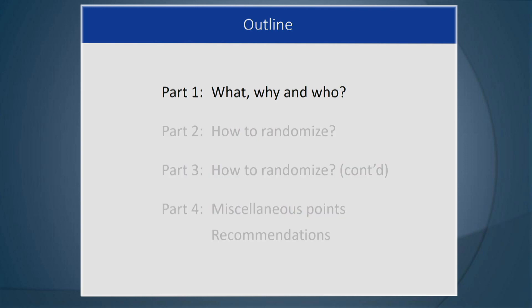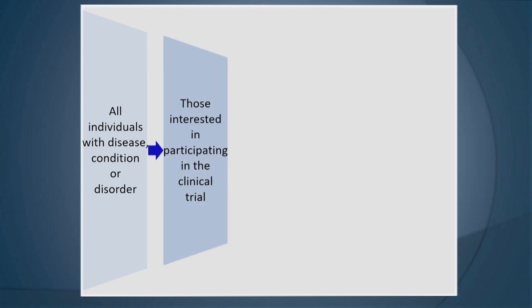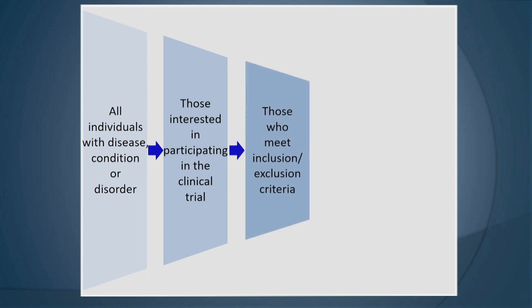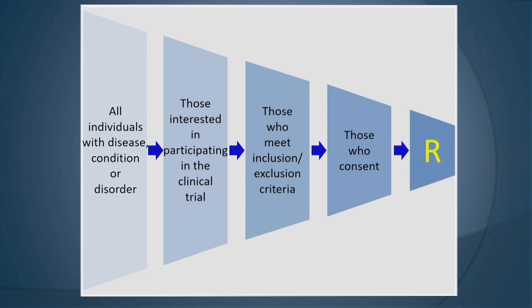Let's start with the what, why, and who. When you do a study, there are all these individuals out there with the disease or condition or disorder that you are trying to study. Of those, some are interested in participating in the clinical trial, and of those, some will be eligible and will meet the inclusion-exclusion criteria. Of those, some will consent, and of those, they will be randomized. We're going to talk in part four about the representativeness of those who are randomized.